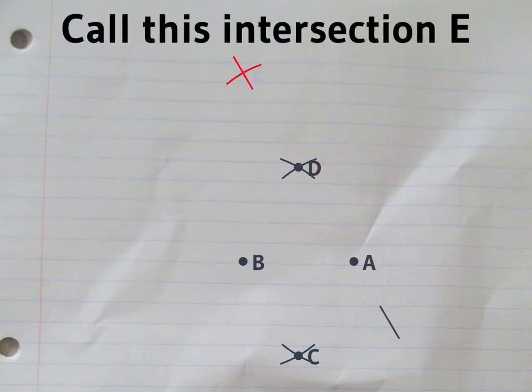The line helps us find the point opposite A on that circle, which we'll call E.